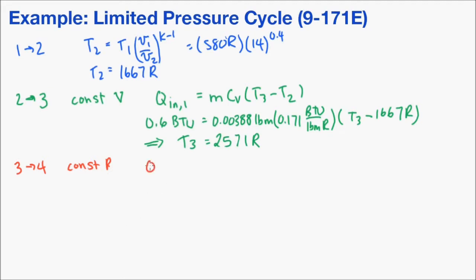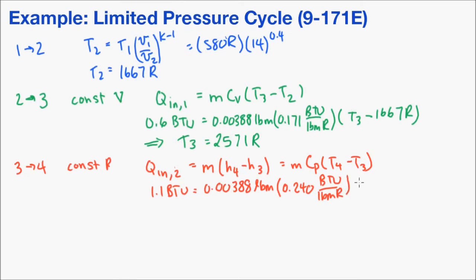From 3 to 4 is a constant pressure heat addition. So we'll write out the energy balance for that. And if you recall from the previous video, because there's work done during this process, we have the enthalpy instead of internal energy. So m*Cp*T4 minus T3. We'll plug in the values we have. We're given 1.1 BTU, we solved for the mass, we look up Cp. We don't know T4, so we'll solve for T4. We get T4 is equal to 3752 Rankine.